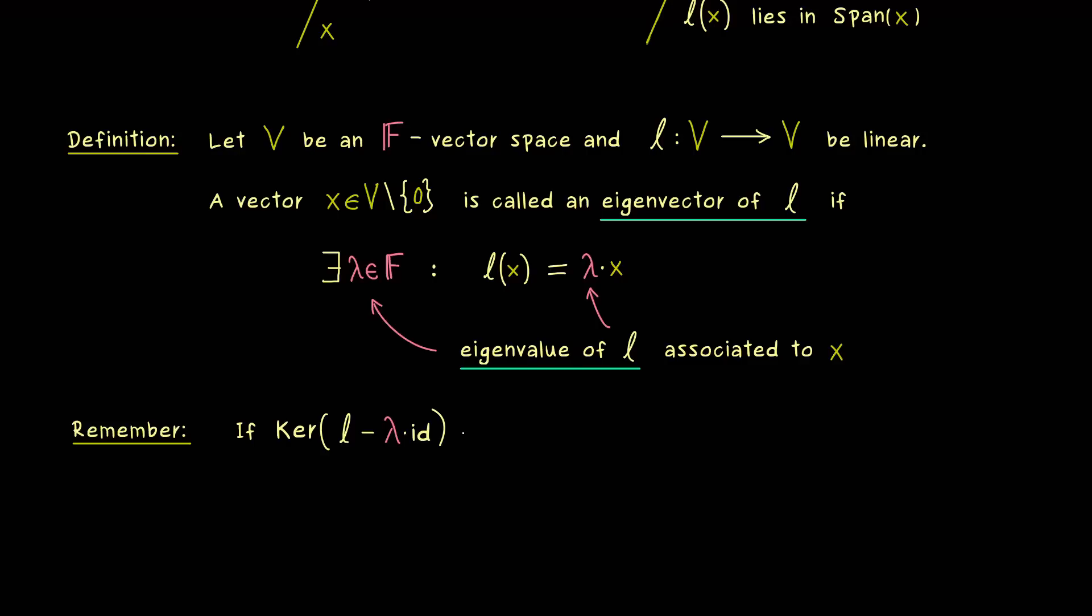And now we know if this kernel is bigger than just the zero vector then we have an eigenvector. And associated to this eigenvector we also have the eigenvalue which is lambda. So this is something you can remember. The information of all the eigenvalues of a linear map is always hidden in the operation kernel of l minus lambda identity.